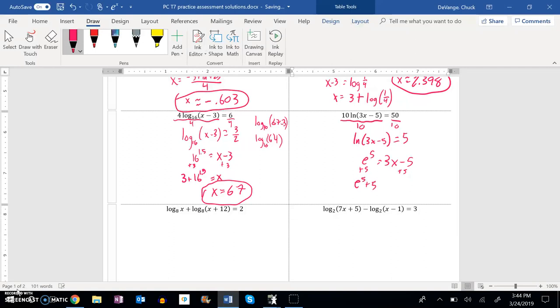So e to the fifth plus 5 is 3x. Divide everything by 3. And that's what x is going to be. So x is e to the fifth plus 5 divided by 3.